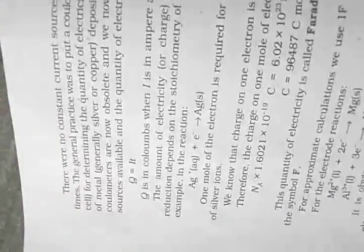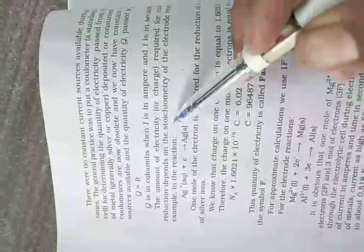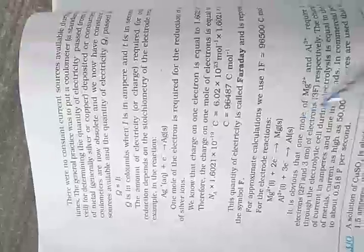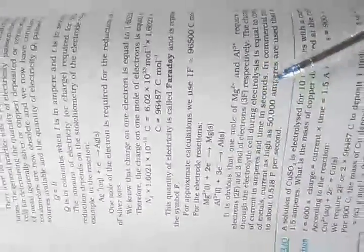The charge passed equals current in amperes multiplied by time in seconds. In commercial production of metals, currents as high as 50,000 amperes are used, which amounts to about 0.158 Faraday per second. I taught you Q = IT for 1 Faraday, 2 Faradays, 3 Faradays, and so on.